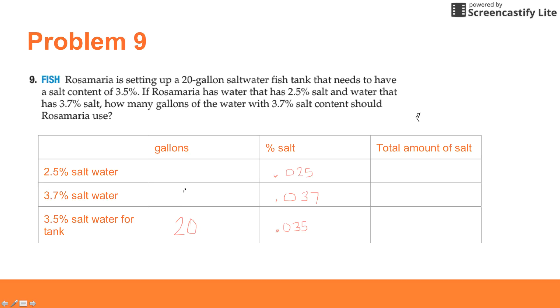How many gallons of the water with 3.7% salt content should Rosa Maria use? That's the one we're looking for, we're going to call that X. If she has 20 total gallons and X of them are the 3.7%, how many gallons does she have of this water? We would take our total minus X. Again, I'm going to leave this up to you. Multiply the first column by the second column to equal the third column, and then once you've got that done, we're going to take our first box plus our second box to equal our third box.